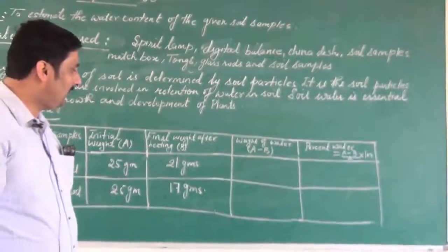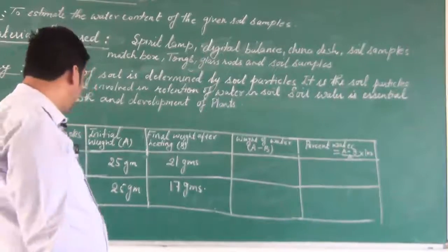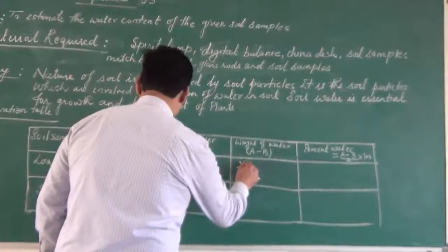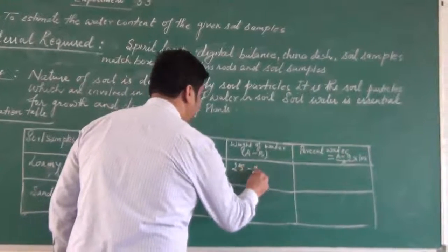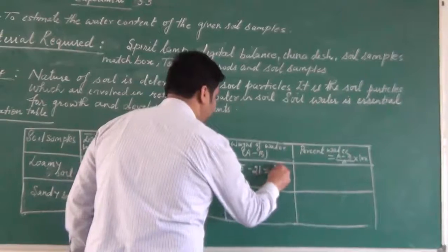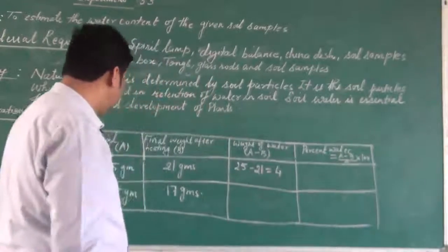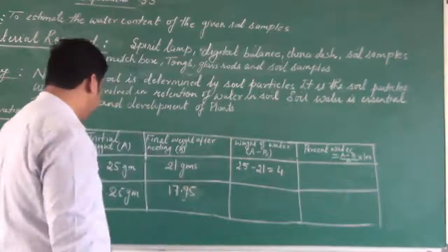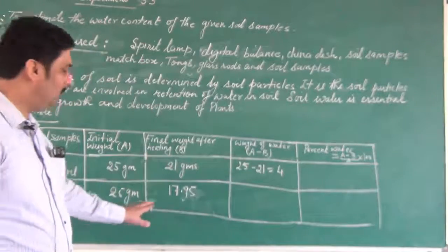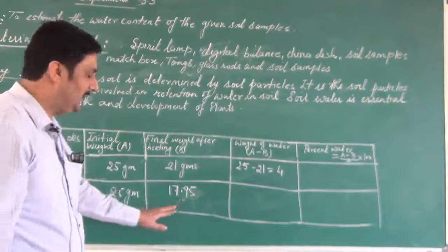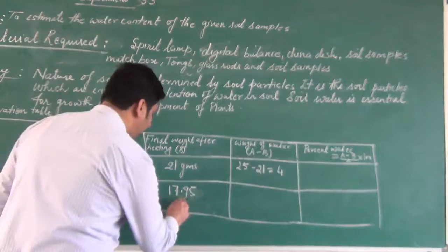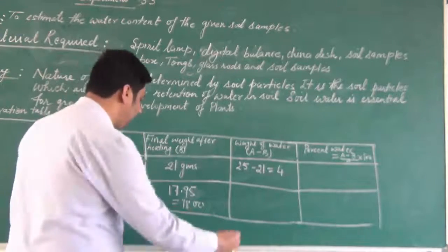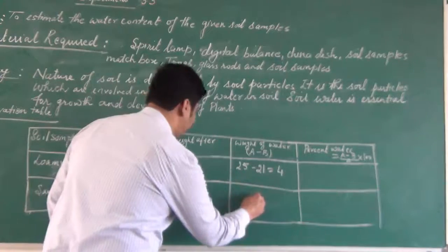Now let us talk about weight of the water. That is A minus B. 25 minus 21, that is 4. Now 25 minus 17.95, you can approximately take it as 18 also. So 25 minus 18, you get 7.